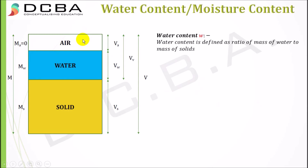Water content is defined as the ratio of mass of water to the mass of solids: w = Mw/Ms. Note that this is a mass relation, not a volume relation.